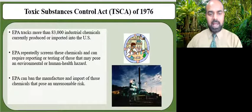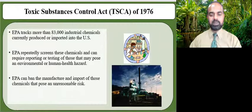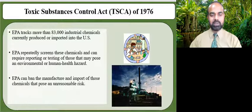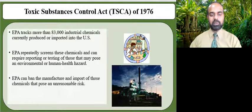The Toxic Substances Control Act, pronounced as TSCA, provides EPA with authority to require reporting, record keeping, and testing requirements and restrictions related to chemical substances and/or mixtures. TSCA addresses the production, importation, use, and disposal of specific chemicals, including polychlorinated biphenyls, or PCBs, asbestos, radon, and lead-based paint, to name a few. EPA tracks more than 83,000 industrial chemicals currently produced or imported into the United States. As new chemicals are commercially manufactured or imported, they are placed on this list. EPA can require reporting or testing of those that may pose an environmental or human health hazard and can ban the manufacture and import of those chemicals that pose an unreasonable risk.